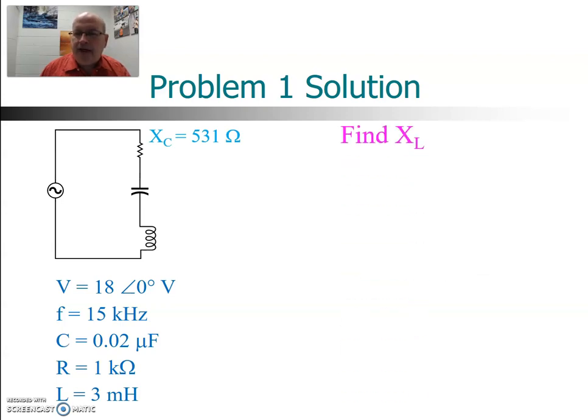Next we'll find XL. XL is equal to 2πFL. Plug our numbers in, and XL is 283 ohms. So we're also going to put that aside, and now we can actually start solving the problem. Find VC.